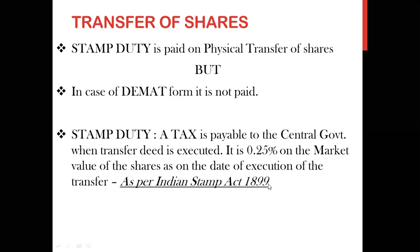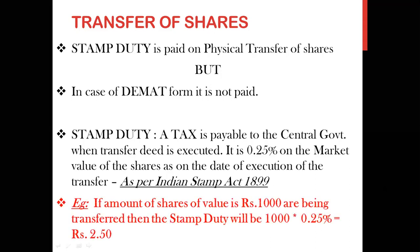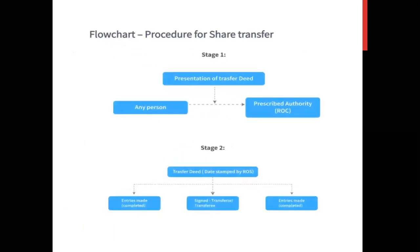As per the Indian Stamp Act 1899, stamp duty is 0.25% of the market value of the shares as on the date of execution of the transfer. For example, if Mr. A is transferring shares worth ₹1,000 to Mr. B, the stamp duty payable would be ₹1,000 × 0.25% = ₹2.50. This is an additional amount — apart from the transfer fees — which Mr. A has to pay. That is what stamp duty means.